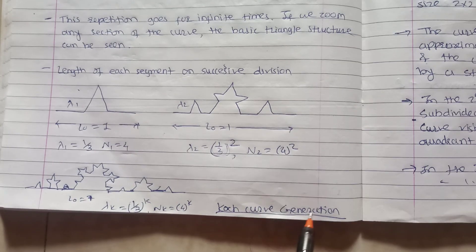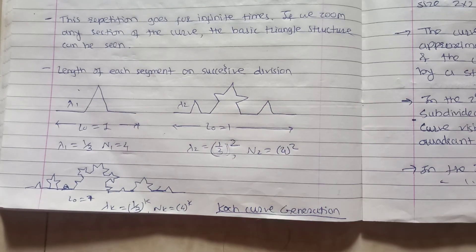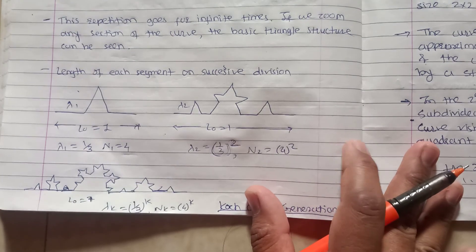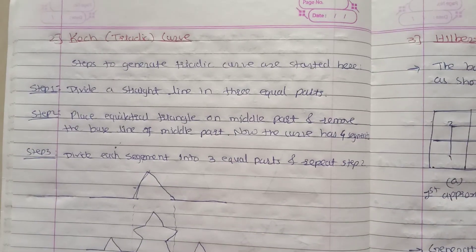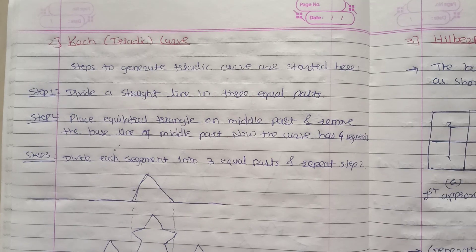And this is the Koch curve generation method. So this is the second method of fractal generation, that is Koch curve or the triadic curve.